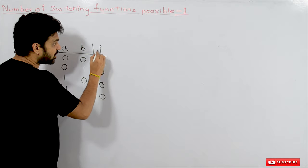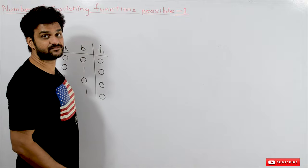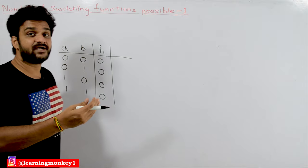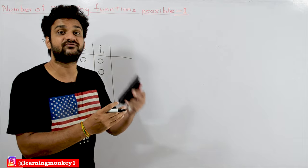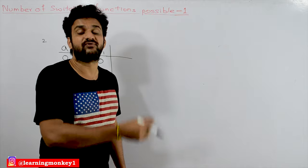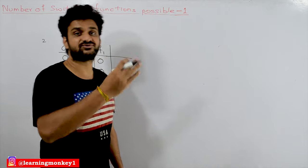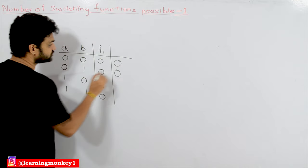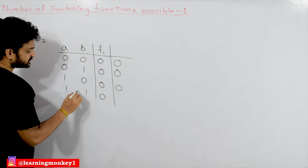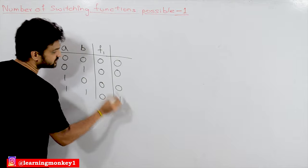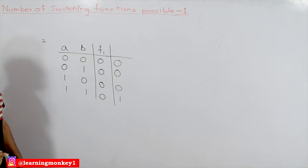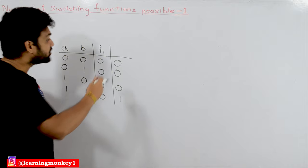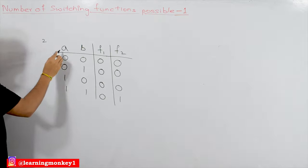How many different kinds of functions are possible? For example, if a user wants a circuit that produces an output of 1 only if both inputs are 1, otherwise it produces 0 — this is an AND operation. So this is another kind of function. We now ask: with two boolean variables, how many different kinds of functions are possible?